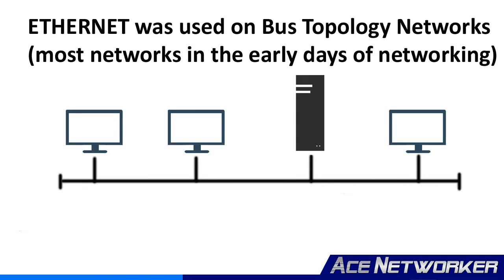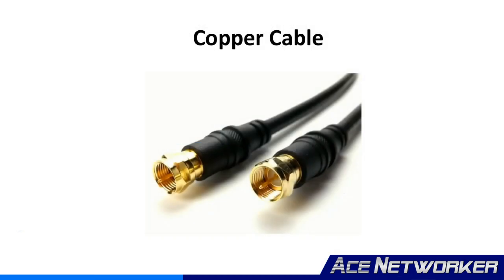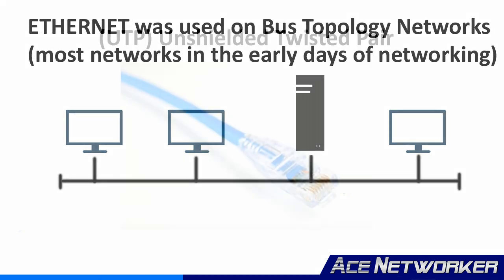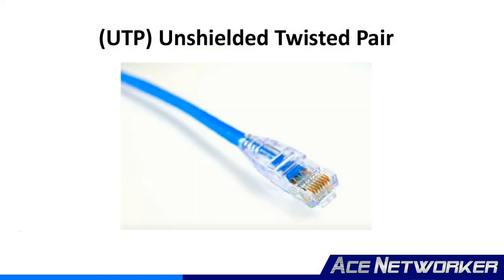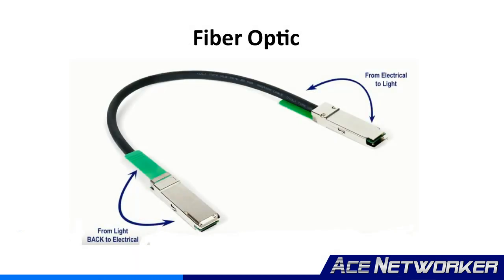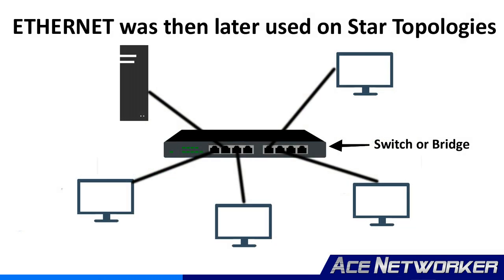Ethernet was used primarily on bus topology networks in the early days that used coaxial cable, as bus topology networks were the majority of network topologies used at the time. However, Ethernet flowed over into other types of network media, many of which we still see and use today, like UTP or unshielded twisted pair, STP or shielded twisted pair, and fiber optic cables on star topology type connections, where a single device like a switch or a bridge connected directly to multiple computers or devices.